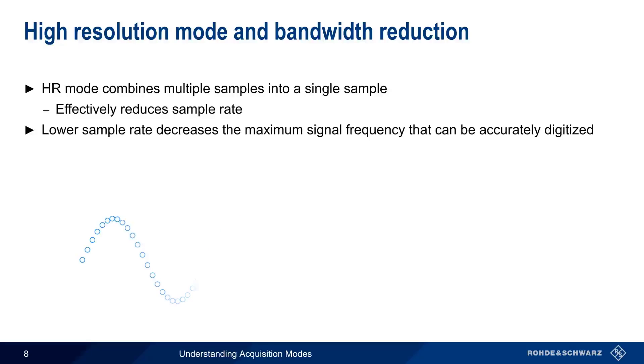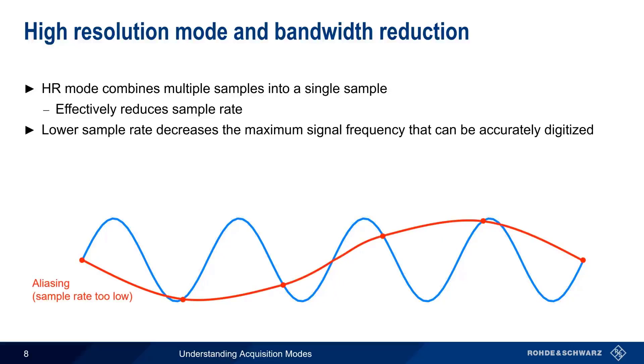For example, a sufficiently high sampling rate would allow our scope to accurately digitize this input signal. But if too low of a sample rate were used, the result would be an aliased waveform that does not accurately represent the analog input signal. Therefore, the reduced sample rate in high-resolution mode will reduce the alias-free bandwidth of an oscilloscope.